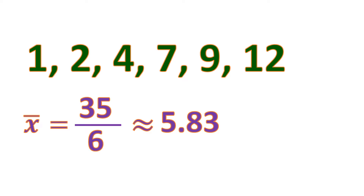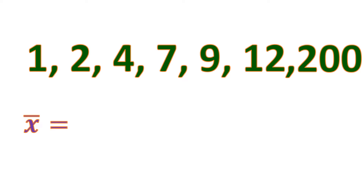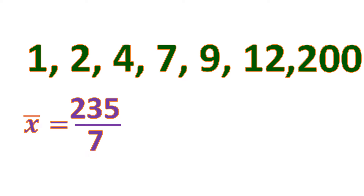So that's the mean. As you can see, 5.83 is located right exactly in the middle of the set of data. Now let's say we're going to add one number — we're going to add 200 — and let's try to find the mean of this new set of data. So the mean is equal to: it was 35 and we added 200, so it's a total of 235, divided by 7 — because we added one number. So 235 divided by 7 is approximately equal to 33.57.